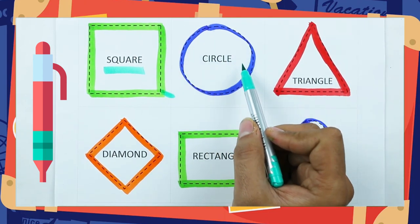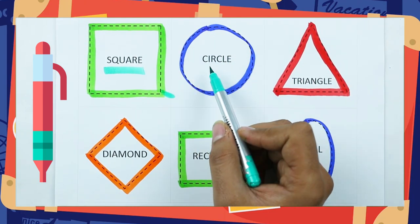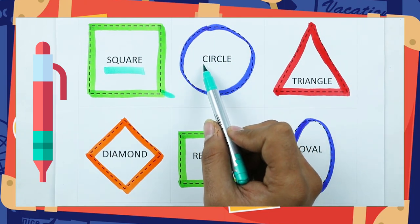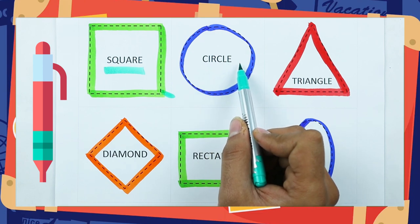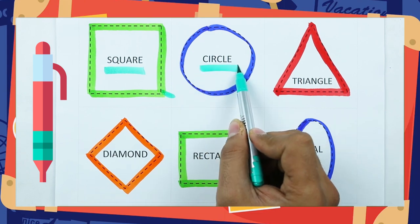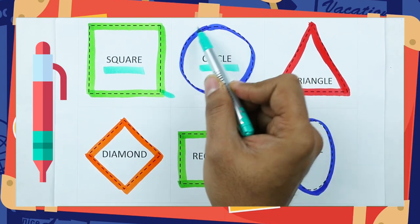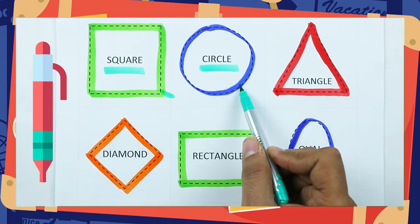Which shape is this? Circle. C-I-R-C-L-E. It's a circle, with blue color.